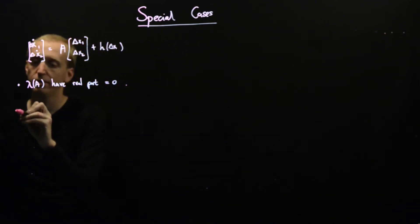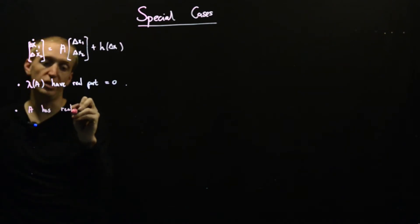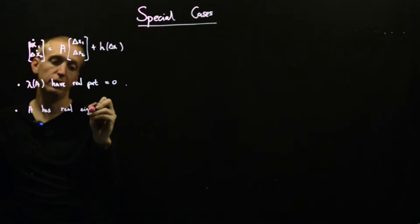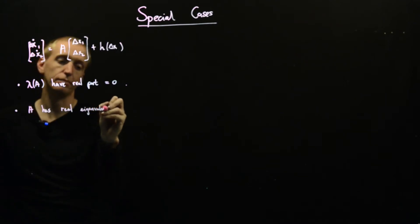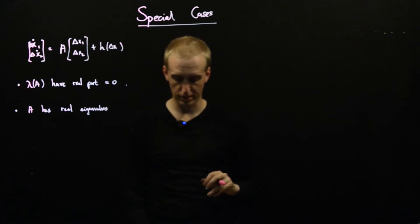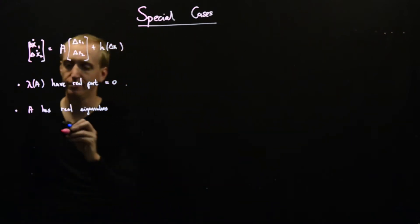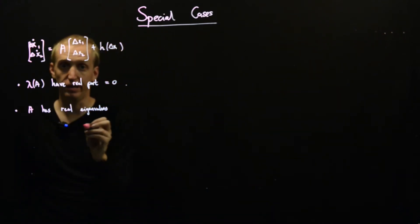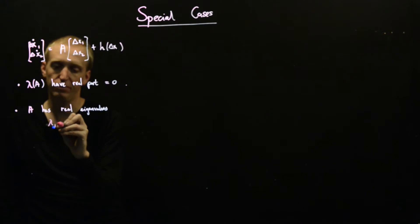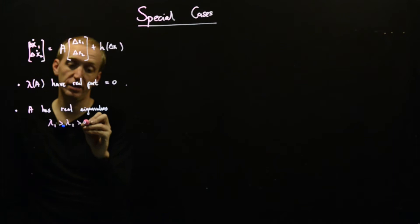And then we sort of began to classify a bunch of cases. So if A has real eigenvalues, then we either got a saddle point or a node. And this depended on how the eigenvalues were ordered.